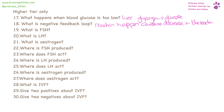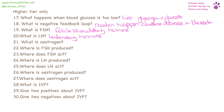FSH is follicle stimulating hormone. LH is luteinizing hormone. Oestrogen is the hormone predominantly found in women, responsible for the control of the menstrual cycle.